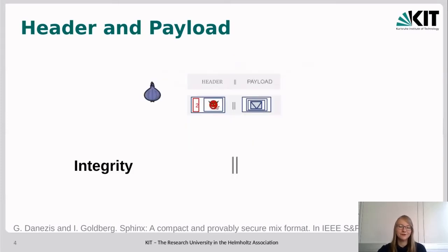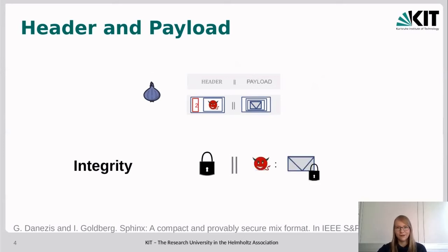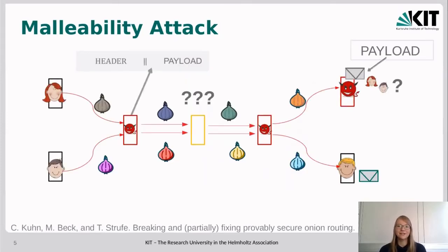One important thing to notice about most onion routing packet formats is that they protect the integrity of the header for every hop on the path, but payload integrity is only checked at the final receiver. This fact enables a dangerous attack: the malleability attack. The malleability attack assumes the adversary controls the first relay and the final receiver and wants to link the sender to the receiver, breaking relationship privacy. The first relay notices when the victim — Alice — sends the grey message, then modifies a bit in the payload while leaving the header as-is, processing the onion normally but with the modified payload.